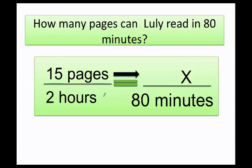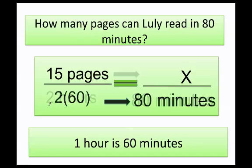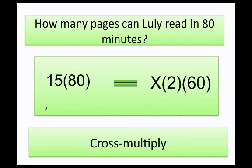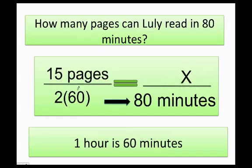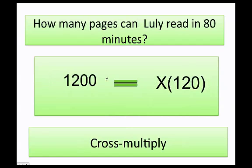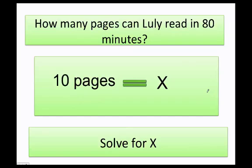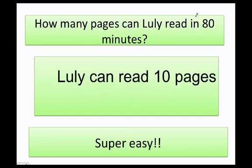Now remember, I cannot put hours with minutes. Well, how do I do this? I remember that one hour is sixty minutes. So now that I know that, I know that in two hours, actually, I have 120 minutes. That's why I multiply two times sixty. That way I'm going to have minutes with minutes, pages with pages. Now I know that this is two times sixty. Let's just go back really quick. This is two times sixty times x, and then eighty times fifteen. Finally, I'm going to go ahead and divide both sides by 120, and I get that x equals ten pages. That means that Lully can read ten pages in eighty minutes.